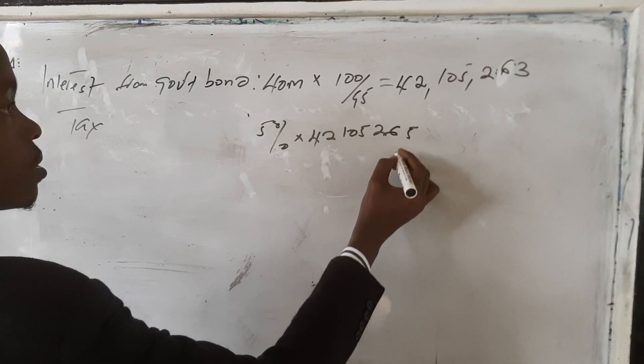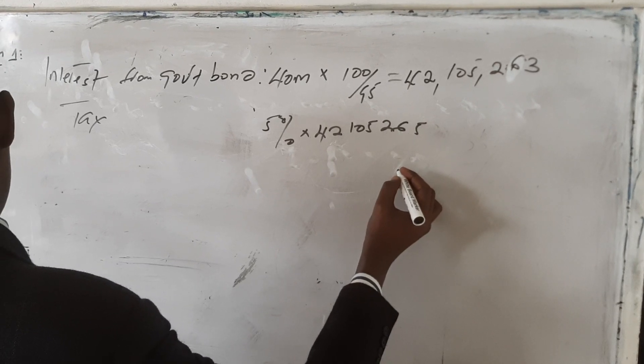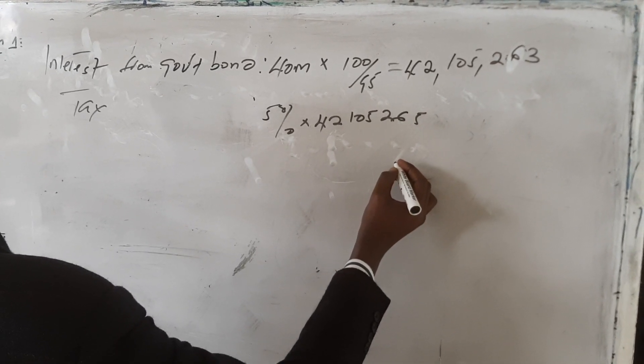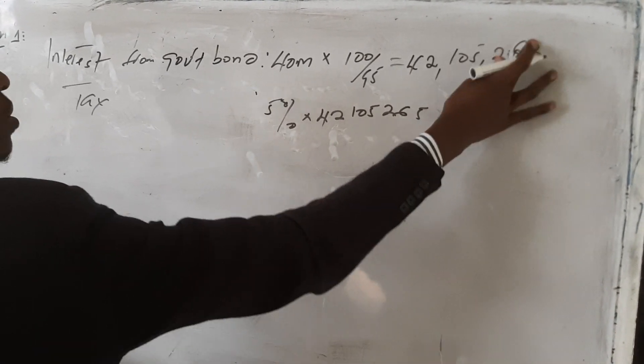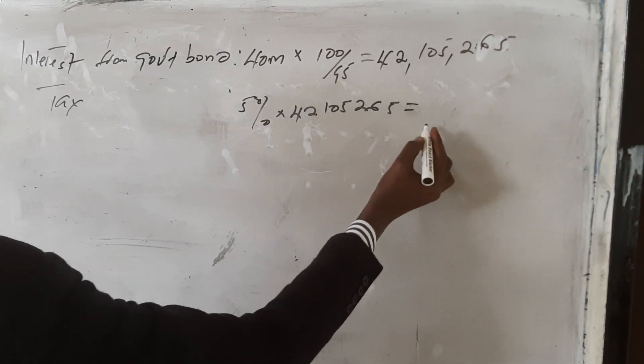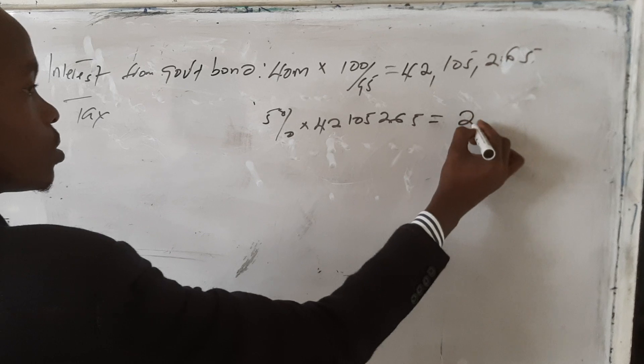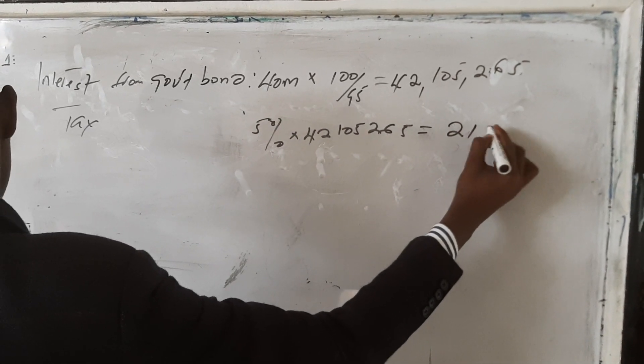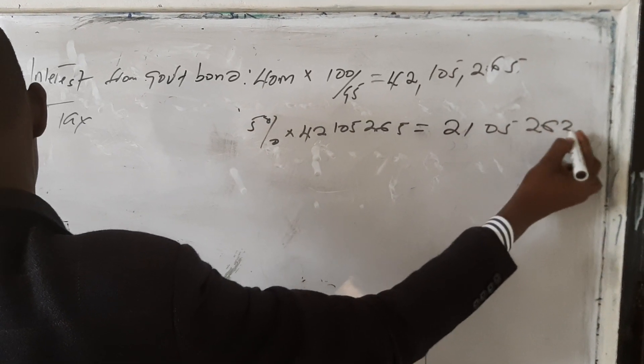42,526,526, and then we get the tax which is 2,105,263.